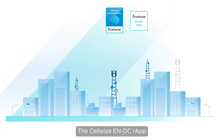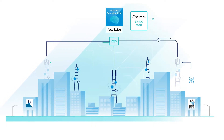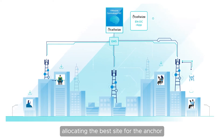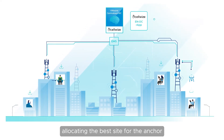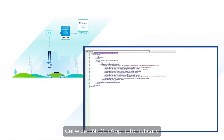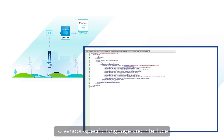The CellWise ENDC R-App then utilizes its AI-ML capabilities. Its deep neural network engine assigns priority ranking for the different sites, allocating the best site for the anchor. CellWise ENDC R-App automatically applies the optimization decisions via messages sent to VMware RIC that leverage QIIME to translate it to vendor-specific language and interface.